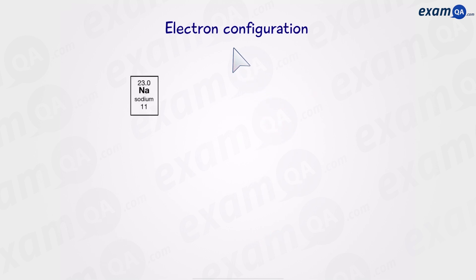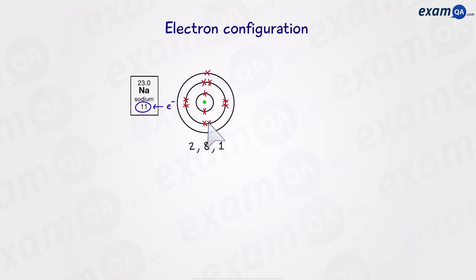Let's get to the main part — electron configuration. Sodium has 11 electrons, arranged as 2 in the first shell, 8 in the second shell, and 1 in the third shell. Up to now we've represented this as 2, 8, 1. However, now we're going to add subshells. The first thing we do is write 1 for the first shell, then open up an s subshell and put 2 electrons — that's the maximum an s subshell can hold. This represents the 2 electrons in the first shell.